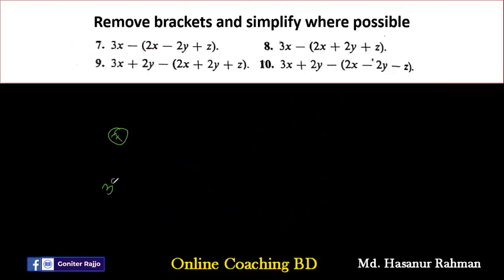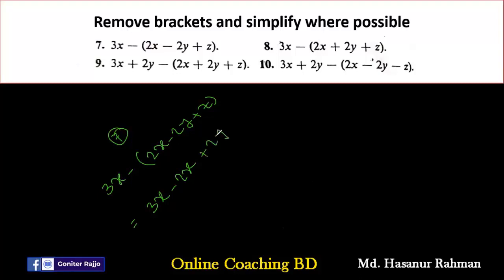Now number 7. Number 7 says: 3x minus (2x minus 2y plus z). So: 3x, minus into 2x gives minus 2x, minus into minus 2y gives plus 2y, minus into plus z gives minus z. So 3x minus 2x equals x, giving x plus 2y minus z. That is the answer of number 7.